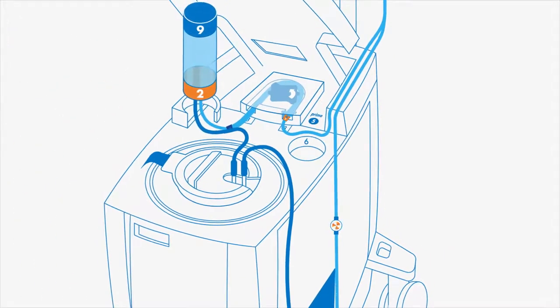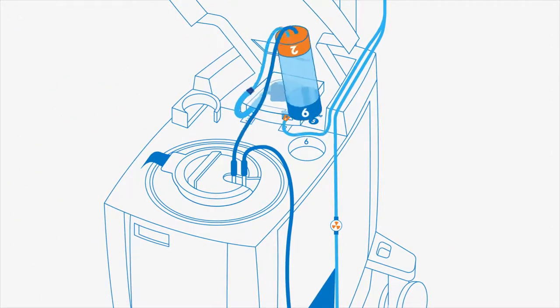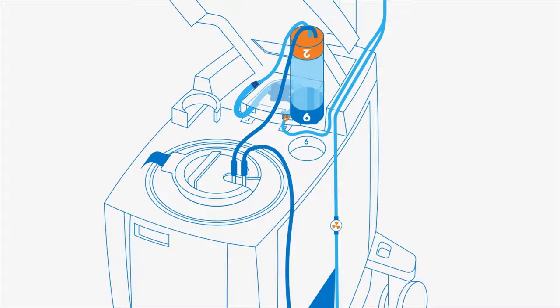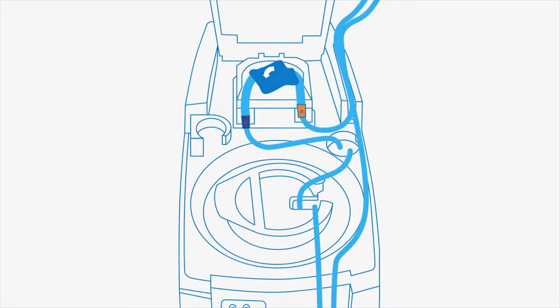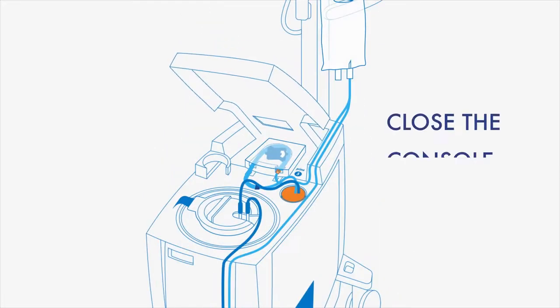Once the startup kit has completely filled with saline, place the air trap, blue end down, into the blue chamber, blue 6 to blue 6. Check to ensure the tubing is correctly aligned and close the console top cover. Console setup is now complete.